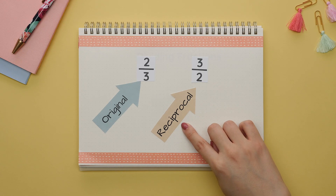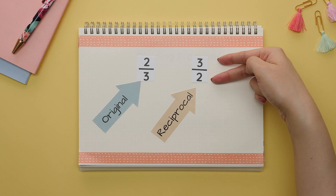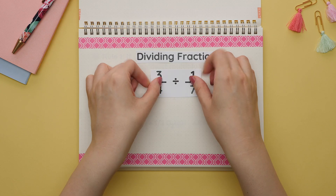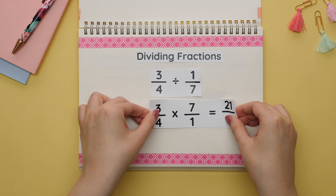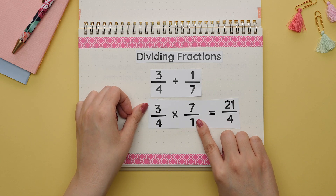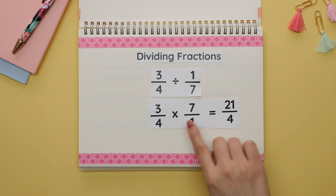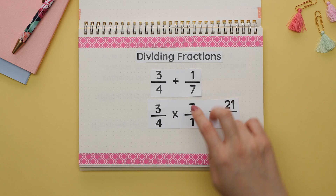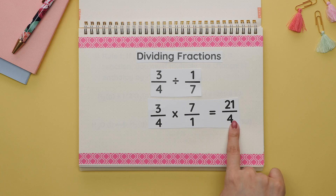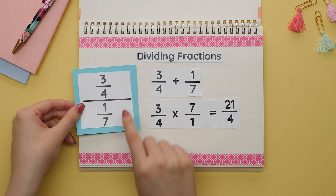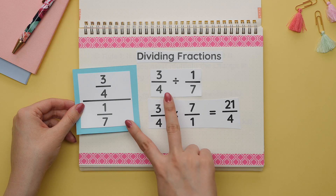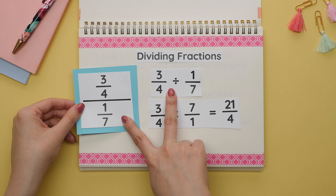Moving on to dividing fractions. You need to know what a reciprocal is: it is the flipped version of a fraction. When dividing fractions, we are actually multiplying by the reciprocal of the second fraction. Once we change the division symbol to multiplication and flip the second fraction to its reciprocal, we can multiply straight across to get our answer. This can be written in two different ways, but we approach it the same way.